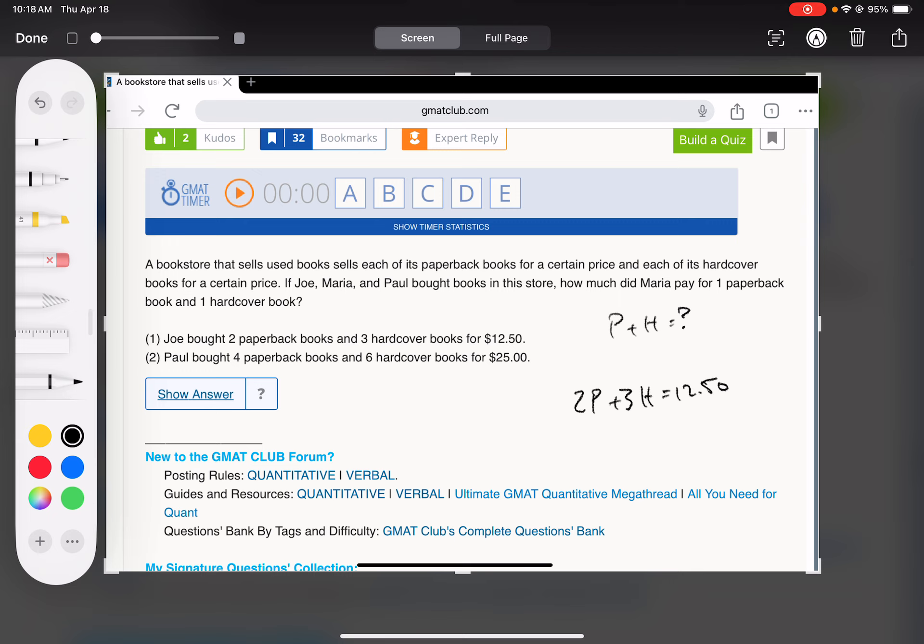But if we're looking at P plus H equals, this is not going to be enough. I mean, if it were like 3P plus 3H, then we could divide the whole thing by three and get P plus H. But there's no one value we can multiply or divide this whole equation to create P plus H. So that's not going to be sufficient on its own.